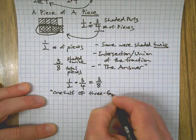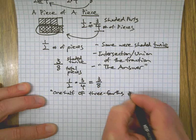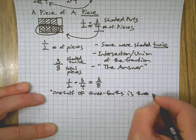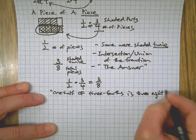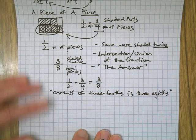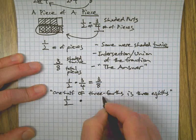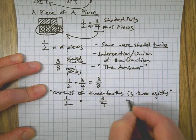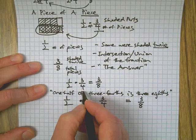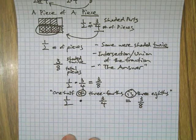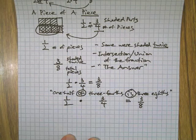Three-fourths is the same as equals three-eighths. Okay, one-half of three-fourths is three-eighths. If you remember those little words, those can be very helpful.